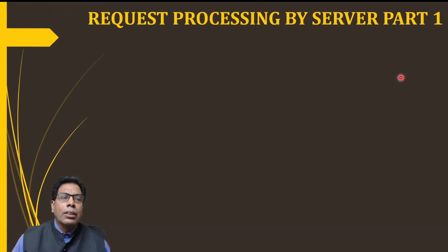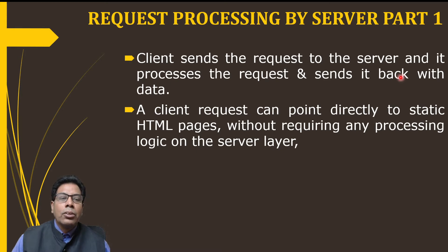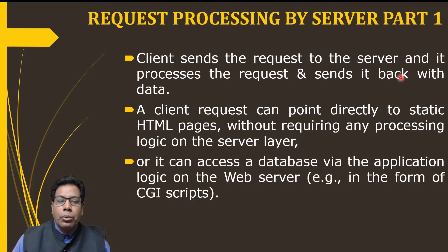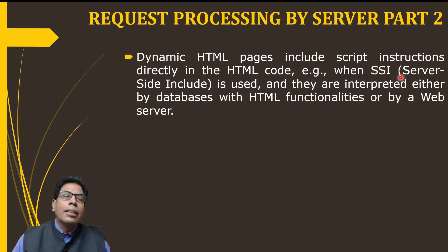For request processing by the server part 1: the client sends a request to the server, the server processes the request and sends back the data. A client request can point directly to static HTML pages without requiring any processing logic on the server layer, or it can access a database via the application logic on the web server. This application logic can be in the form of CGI scripts, which are able to access the database and retrieve data.